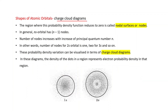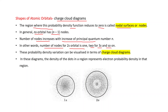The region where the probability density function reduces to 0 is called a nodal surface or node. In general, an ns orbital has n minus 1 nodes. The number of nodes increases with the principal quantum number n — 2s has 1 node, 3s has 2 nodes, and so on.